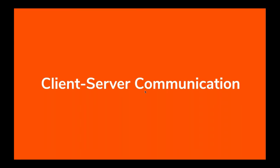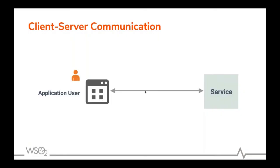First of all, what is client-server communication? Let's go with an example. An airline exposes their microservices directly for internal and external applications. There is an internal application that uses the data. Let's call the airline ABC and the application the Flight Information System. It will be a simple client-server communication where ABC exposes daily flight information and the Flight Information System uses them.